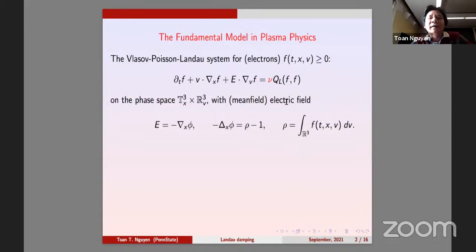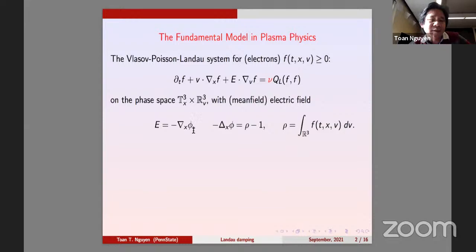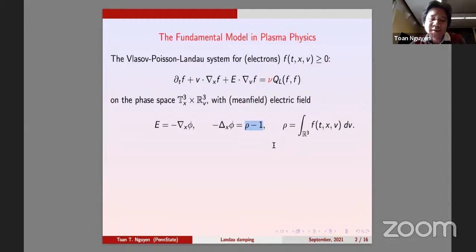For the Vlasov equation, there's only one nonlinear term: f is moving like a transport equation with a force field, which is a self-consistent electric field obtained via mean-field long-range interactions. This is written explicitly via Poisson's equation, generated by the charge densities rho minus one, where rho is the integral of f and one represents the background density of ions. The situation is that ions are very heavy and slow, and we're interested in the dynamics of electrons which are very fast.